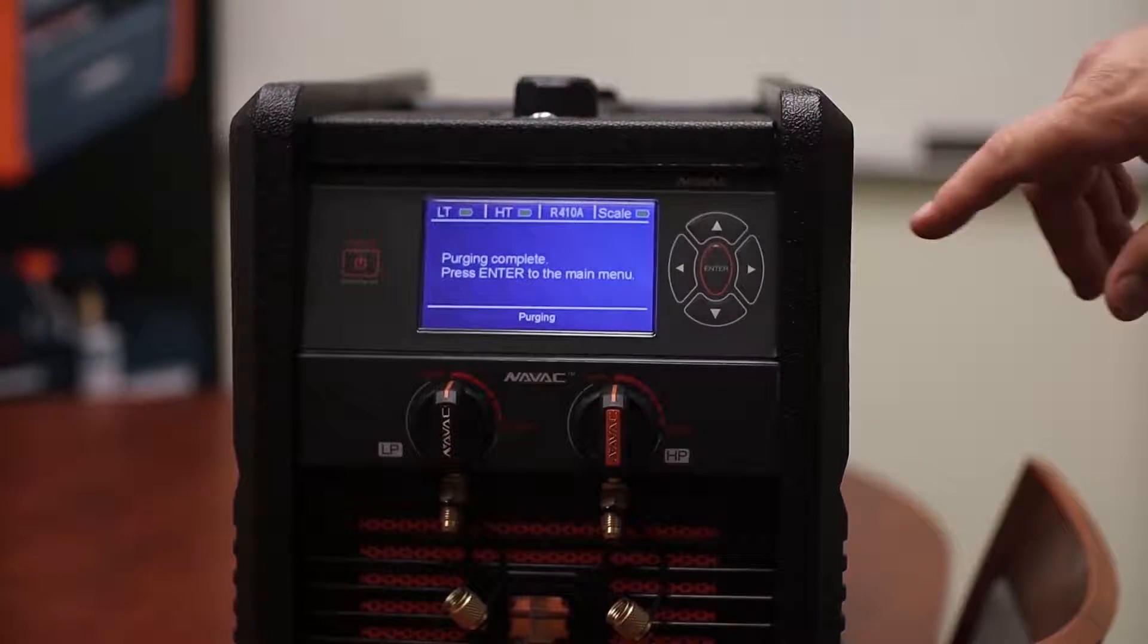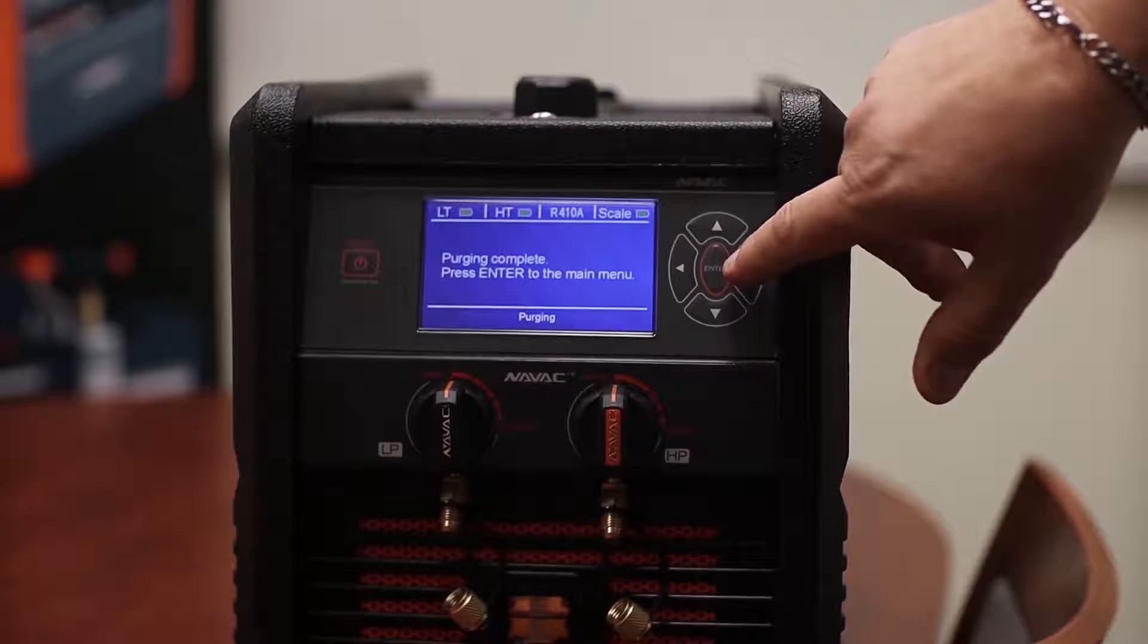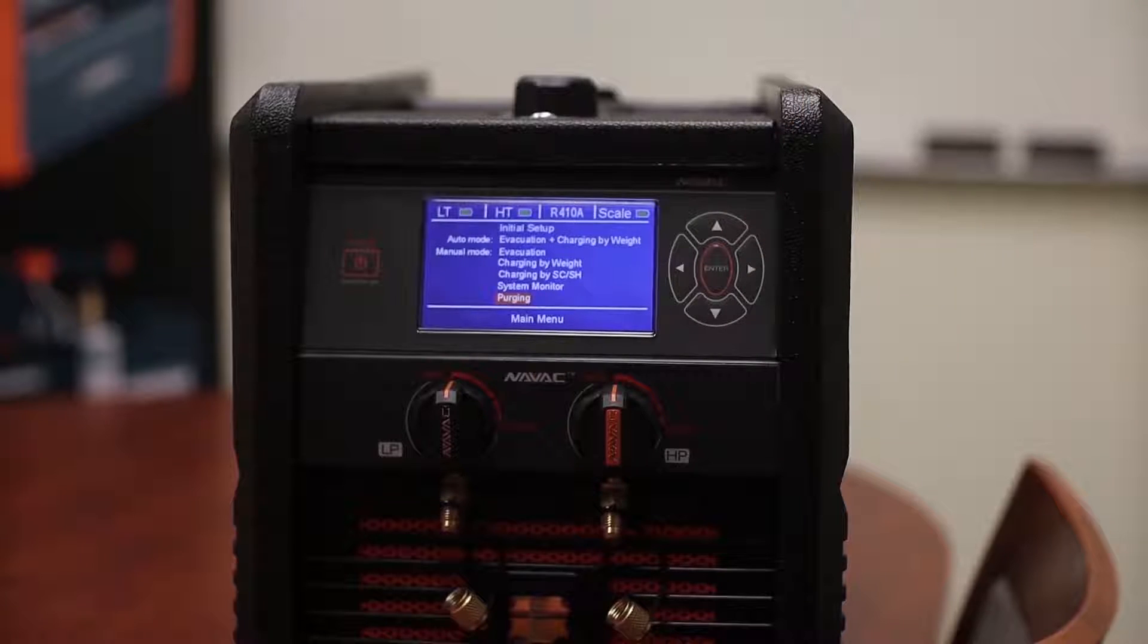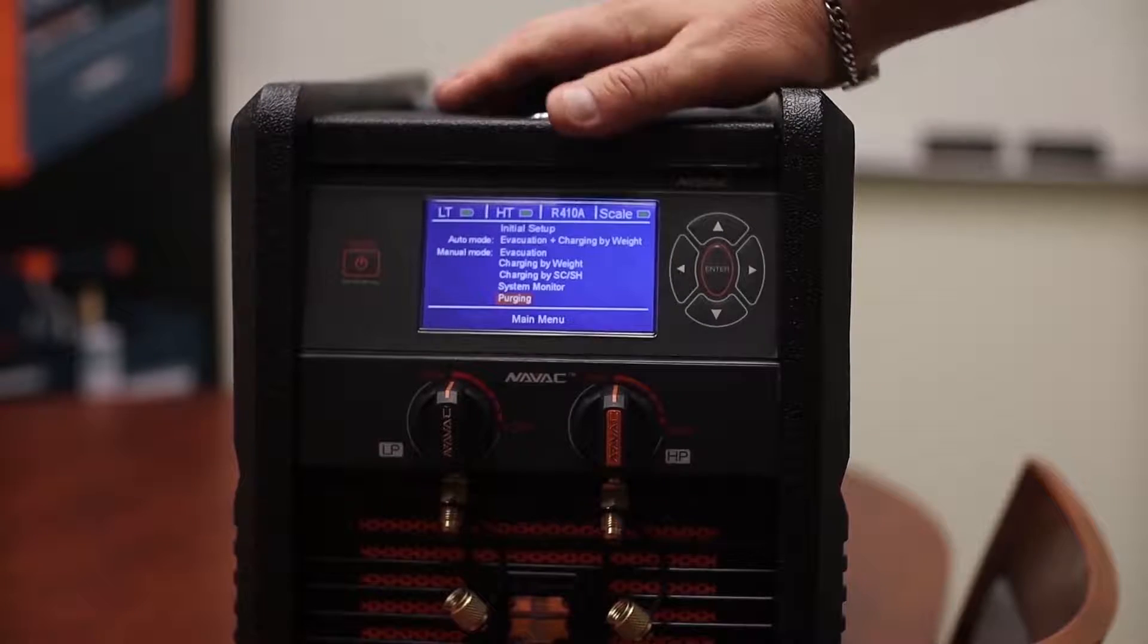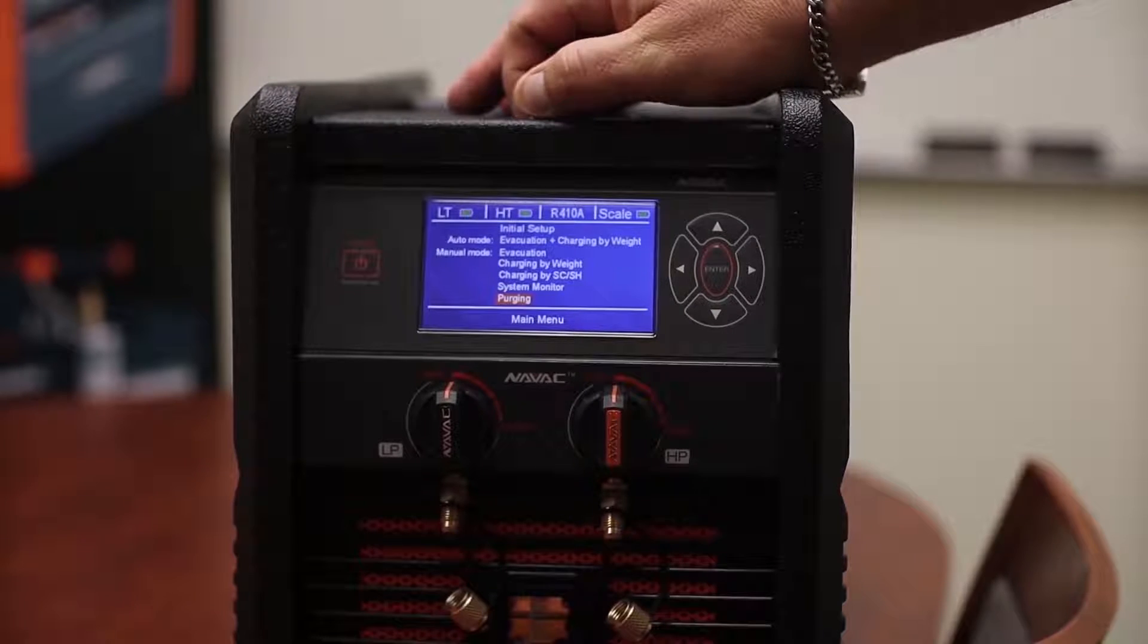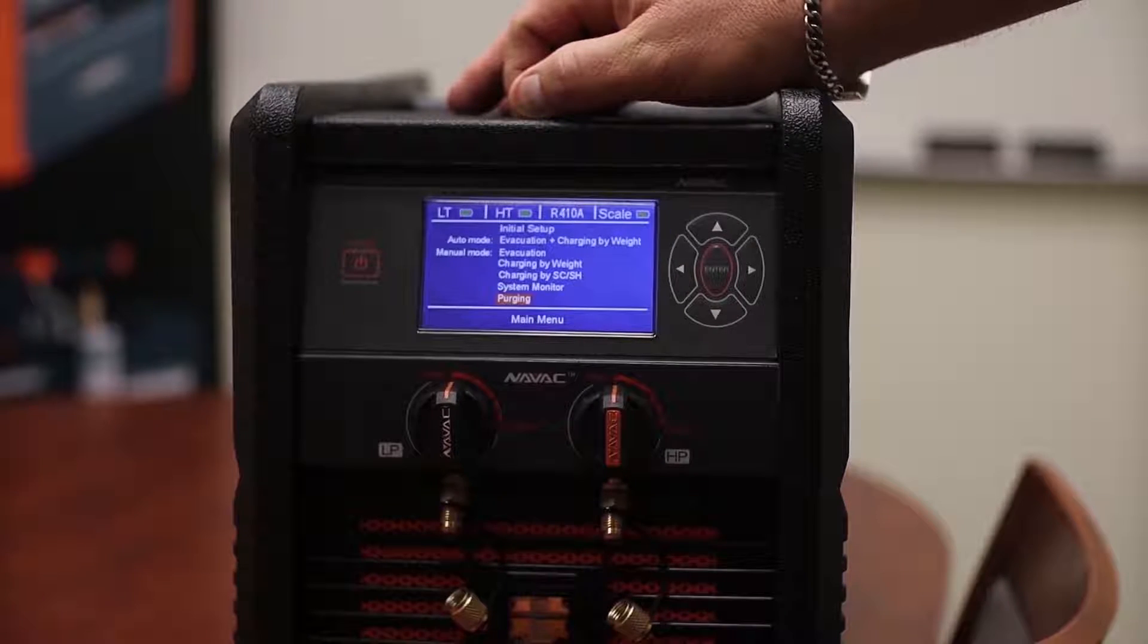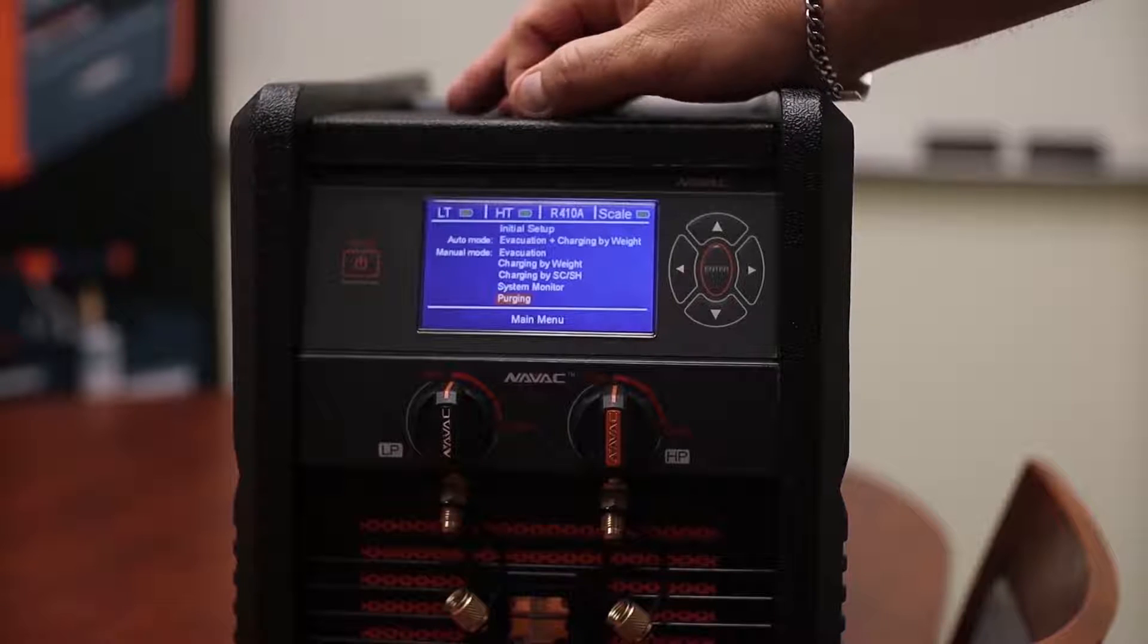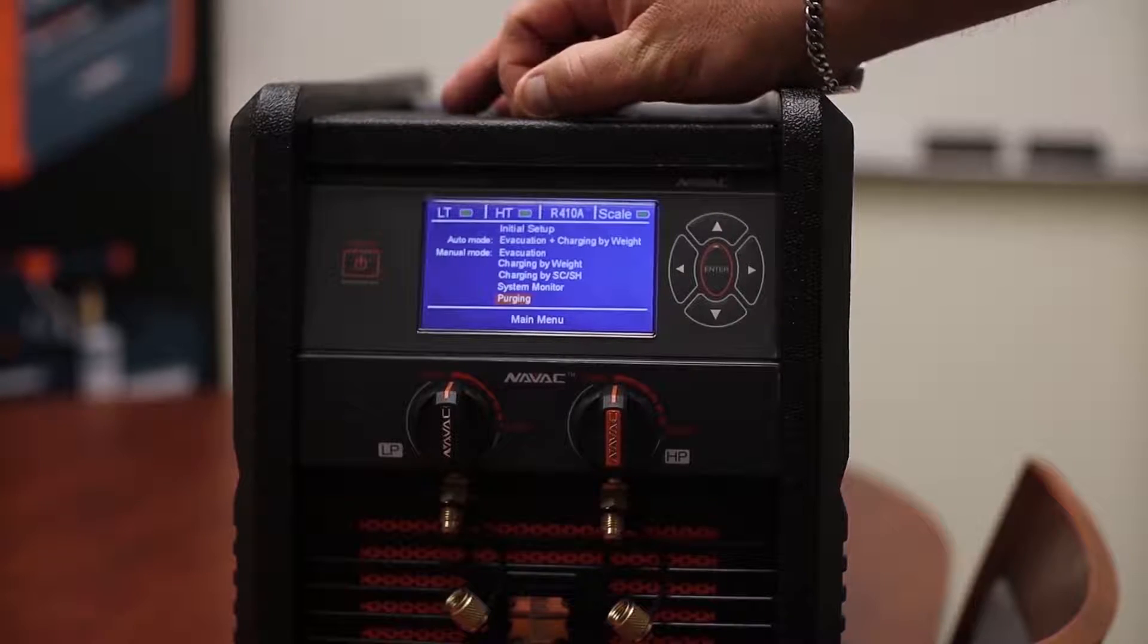So purging is complete. Purging complete, press enter to the main menu. And that is a quick walkthrough on the operation of the NAVAC NRC 62D refrigerant charging station.